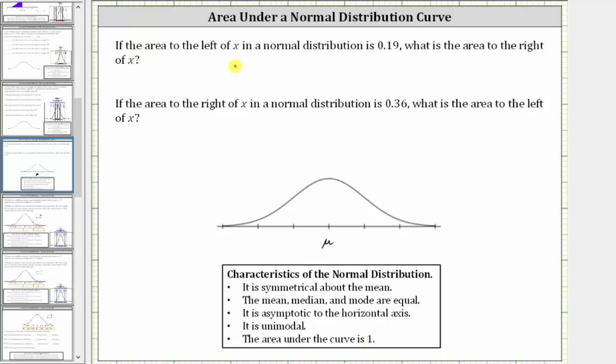So if the area to the left of a data value x is 0.19, let's say x is approximately here. And we're told the area to the left is 0.19, this area here. Then the area to the right, this area in red, must be equal to one minus 0.19, which is equal to 0.81.